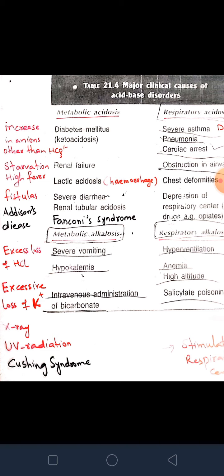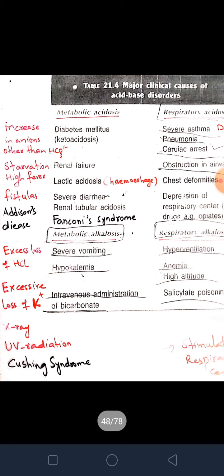The second condition is metabolic alkalosis. The main cause is severe vomiting — there is loss of HCl from the body. When there is loss of chloride ions, based on the chloride shift principle, chloride and bicarbonate work in counter-compensation: when chloride is high, bicarbonate is low; when bicarbonate is high, chloride is low. So in severe vomiting, loss of chloride is associated with increase in bicarbonate ion.